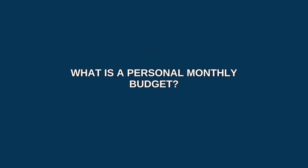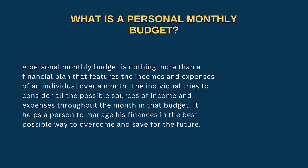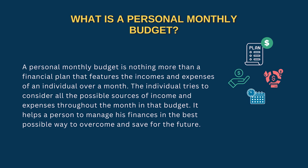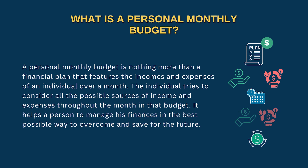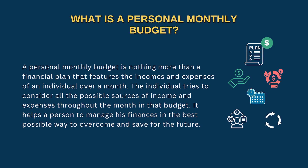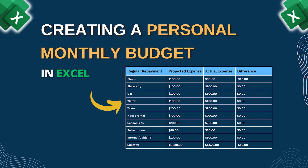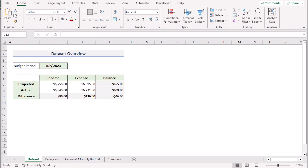The first question: what is a personal monthly budget? A personal monthly budget is nothing more than a financial plan that features the income and expenses of an individual over a month. The individual tries to consider all the possible sources of income and expenses throughout the whole month. It helps a person to manage his finances in the best possible way to overcome and save for the future. In this video, we want to show two methods to make a personal monthly budget in Excel, using Microsoft Excel 365.